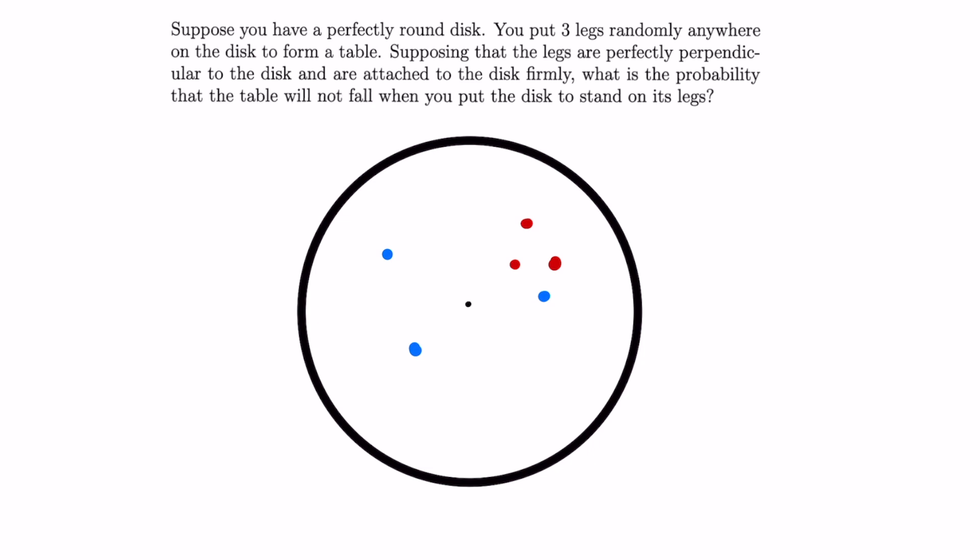If we draw a couple more points on this disc and think about whether the table would fall or not, it becomes pretty clear that the table won't fall if the center of the table lies within the triangle defined by the three points such as it does right here. If the center is outside of this triangle, then the legs won't be able to offer enough support and the table will fall.